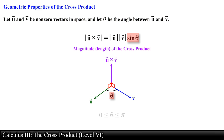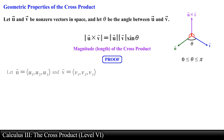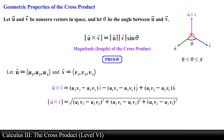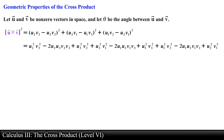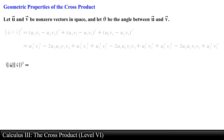We can prove this property by starting with the component definition of the cross product and finding an expression for the magnitude of the cross product. We work with the square of the magnitude, which simplifies to a specific expression. Expanding each of the terms and noting that the magnitude of vector u times the magnitude of vector v squared can be represented using the components of the vectors, distributing gives us the following expression.